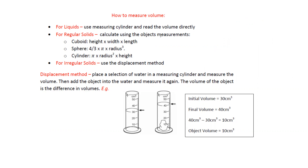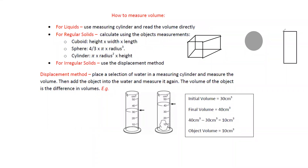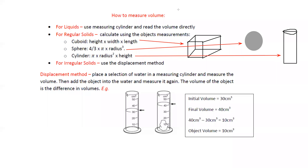For a regular solid — one with a definite shape — we use formulas. For a cuboid, the volume is length × width × height. For a sphere, the formula is (4/3)πr³. For a cylinder, the formula is πr²h. These are the formulas used for regular or definite-shape objects.